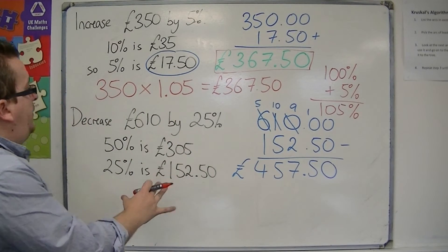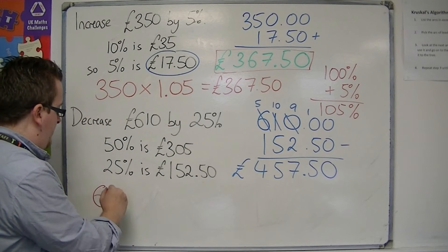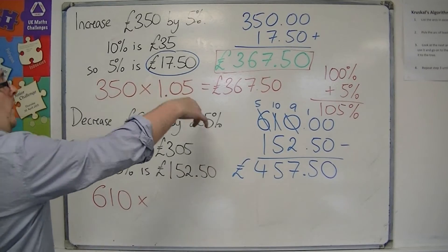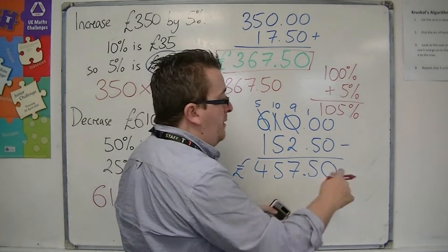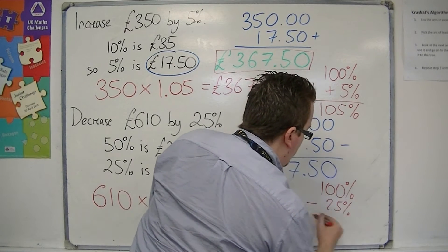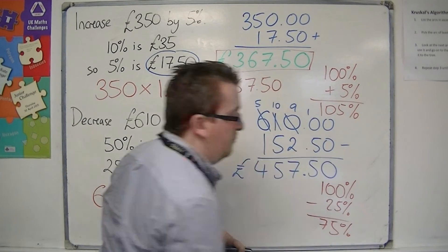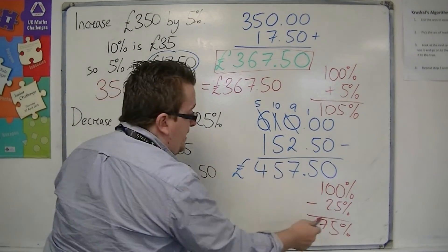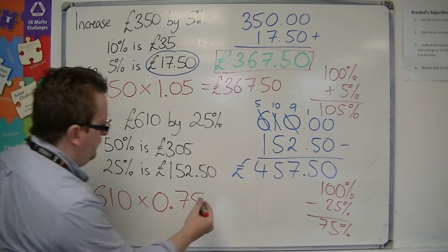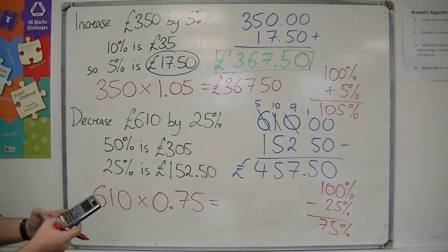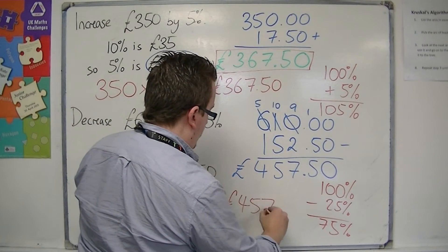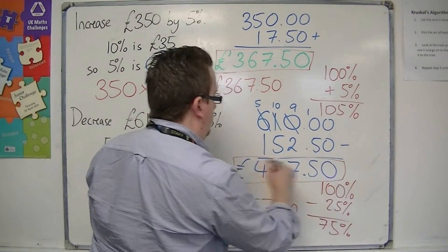If you're then going to try the decrease, I want the £610 and I'm going to multiply it by a quantity. I want to decrease by 25%, so I'm going to take the whole 100%, take away 25%, which will leave me with 75%. So I want 75% of it, so I multiply it by 0.75. 610 times 0.75, which is £457.50, which is the same as what I got.